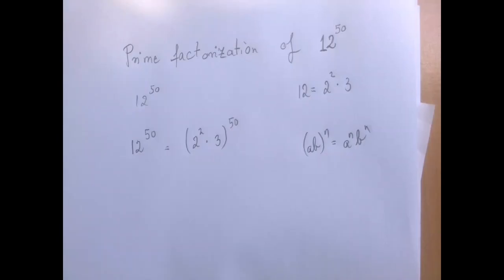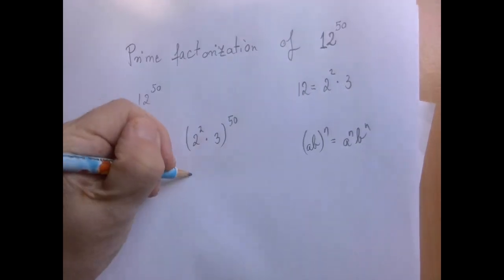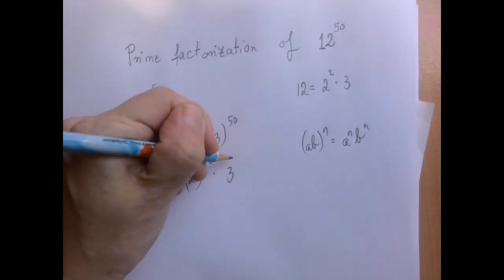Now let us observe this rule of exponentiation that states that we can exponentiate a product factor by factor. Then we get 2 squared to the 50th power times 3 to the 50th power.